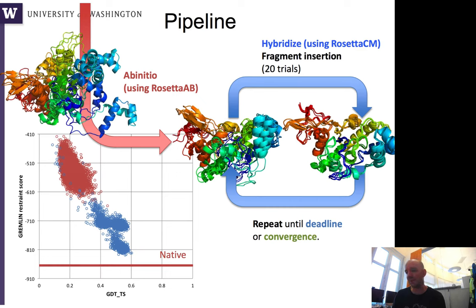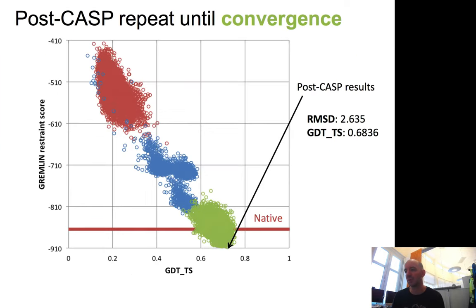As mentioned, you can use these contact predictions for folding with Rosetta, and you can get very accurate models. Using the RosettaCM hybridization protocol with fragment insertion, you can achieve high-quality models.